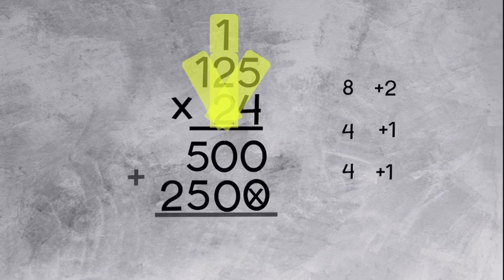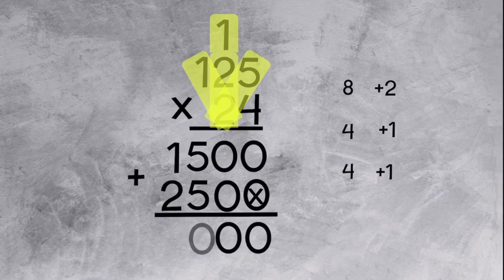Let's quickly put both answers together. We get 0, 0, carry the 1, bring down the 0, and 3. The product is 3,000.